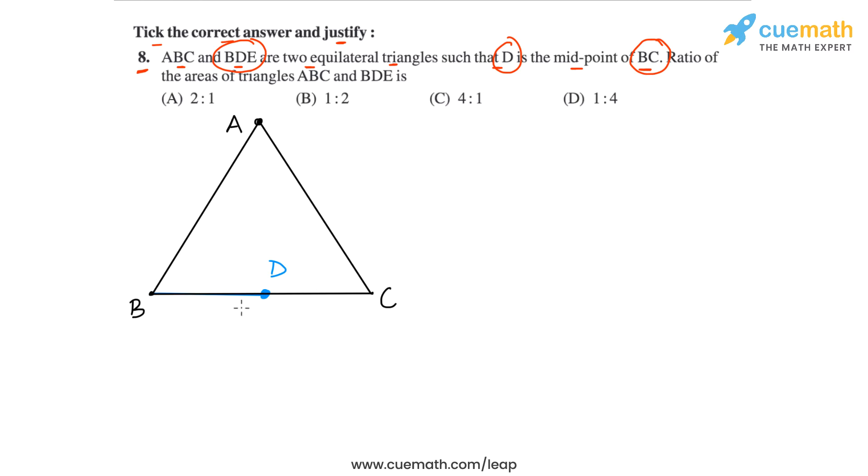So BD is one side and then let's take the triangle to be like this. So this is let's say point E and BDE is also an equilateral triangle. So we have to find the ratio of areas of triangle ABC and triangle BDE.